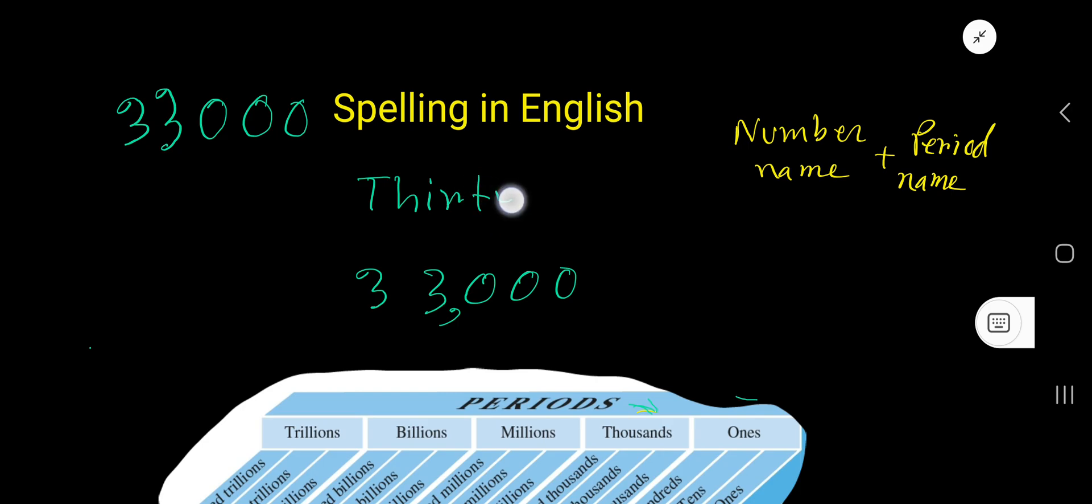Thirty-three, then the period name: thousand. So, thirty-three thousand. From numbers 21 to 99, we have to use a hyphen.